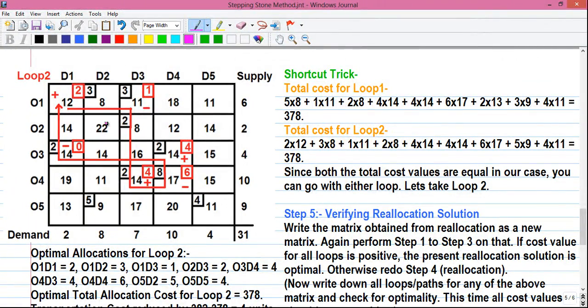So here we have 1, 2, 3, 4, 5, 6, 7, 8, 9, 10, 11, 12. 12 unoccupied cells. So you need to write down all 12 loops for that. That is a very tedious process. But now I will tell you another shortcut trick to know whether this looping solution is optimal or not without writing the loops actually.